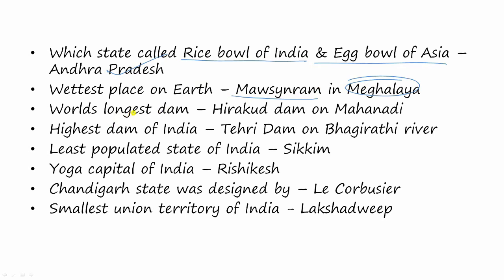The world's longest dam is Hirakud Dam on the Mahanadi River. The highest dam of India is Tehri Dam on the Bhagirathi River. The least populated state of India is Sikkim, and the yoga capital of India is Rishikesh. Chandigarh was designed by Le Corbusier. The smallest union territory of India is Lakshadweep.